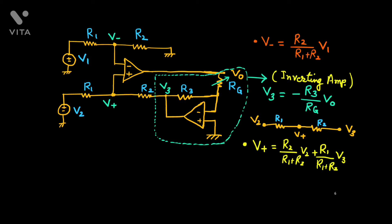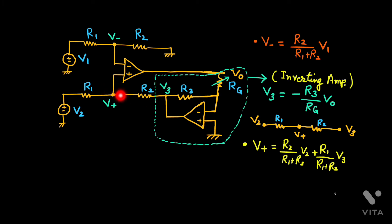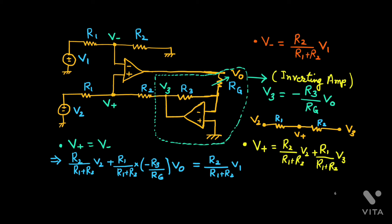Now we have V_plus and V_minus. We can compare them because this circuit has negative feedback: V0 and V3 are 180 degrees out of phase — whatever V0 is, it is inverted at V3, and that is added back to the positive terminal, thus providing negative feedback even though it is connected to the positive terminal. So we can use V_plus equals V_minus, and substituting V3 equals minus R3 over RG times V0.